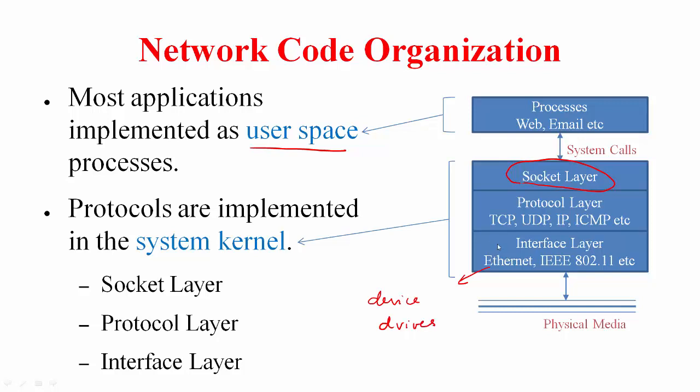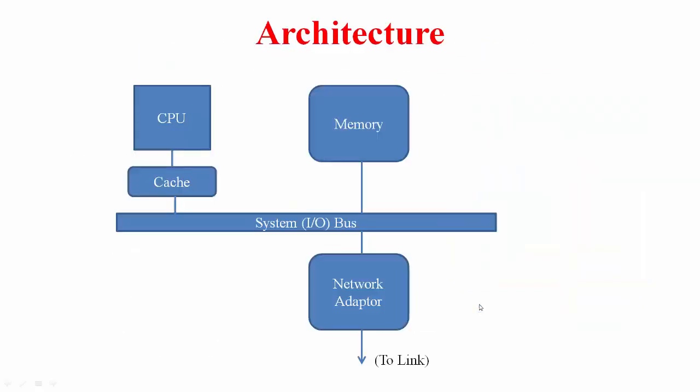Finally, the data arrives at the interface layer which includes the device drivers. For example, Ethernet driver or Wi-Fi driver, and these drivers put the data onto the physical media. If you have done a course on computer architecture, you would have already seen this block diagram. What is relevant to us here is the network adapter. This is a piece of hardware that often implements a processor as well.